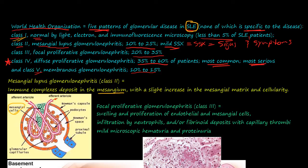There's a slight increase in the mesangial matrix and the cellularity. What that means is there's going to be more of these mesangial cells — an increased number — and there are going to be cells that increase in response to that stress.